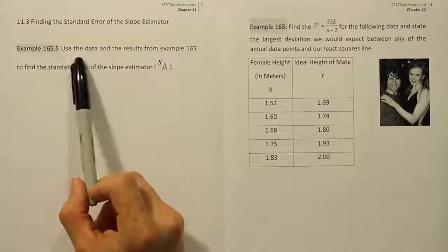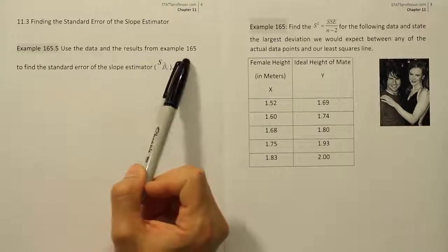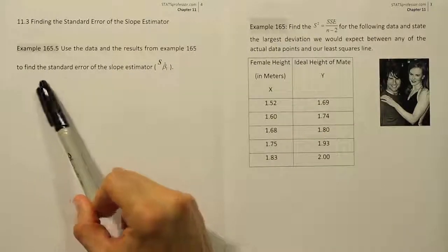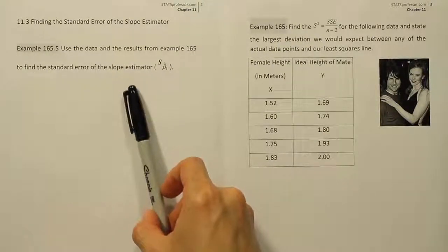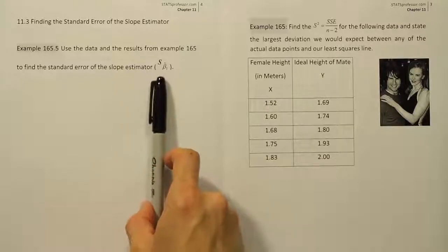Example 165.5: Use the data and the results from example 165 to find the standard error of the slope estimator s beta 1 hat.